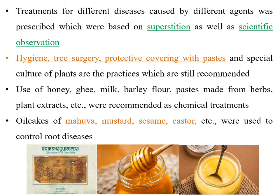Use of honey, ghee, milk, barley flour, and paste made from herbs and plant extracts were recommended for chemical treatments. Oil cakes of mahua, mustard, sesame, and castor were used to control root diseases especially. This was a very important book with a lot of information on plant diseases and various treatments for managing them mentioned in Vrikshayurveda, written by Surapala.